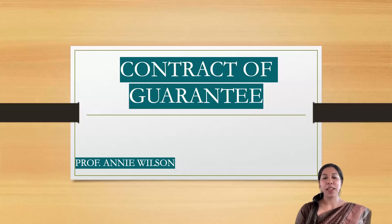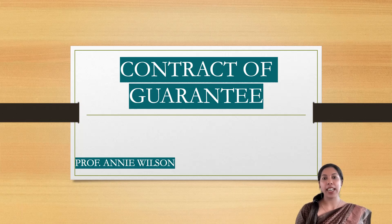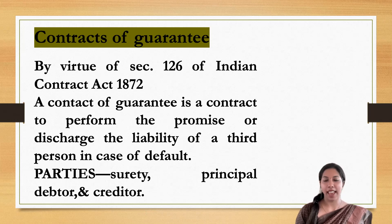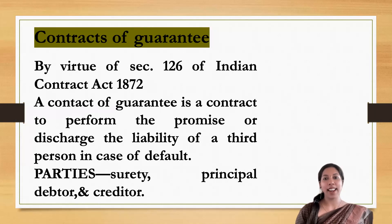Welcome back to Legal Brain. In today's class, I'm going to discuss yet another important area: Contract of Guarantee. From an exam point of view, I'll be explaining what a Contract of Guarantee is, which section speaks about it, and the concept. First, I'll give you the definition. Section 126 of the Indian Contract Act 1872 defines Contract of Guarantee as a contract to perform the promise or discharge the liability of a third person in case of default.